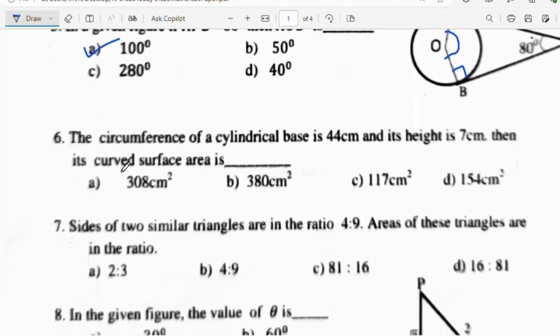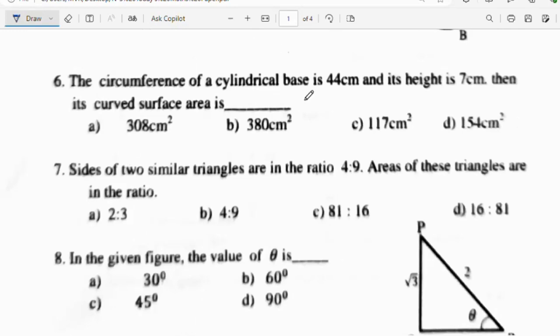Question number 6: The circumference of cylindrical base is 44 cm and its height is 7 cm. Then its curved surface area is. Using the curved surface area formula, we will get 308 cm square. Option A is the right answer.